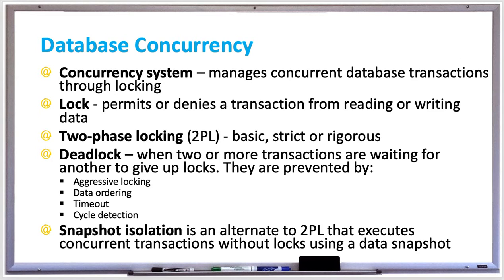The concurrency system figures out when to grant or release locks by monitoring active transactions. Lock requests are handled by the lock manager, which tracks, grants, and releases locks. The concurrency system implements each transaction's isolation levels by requesting shared and exclusive locks as needed, and also reduces the duration of transactions waiting for lock data by minimizing lock scope.